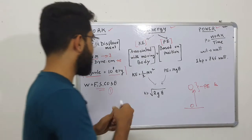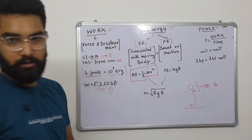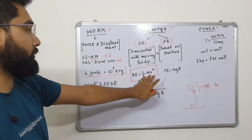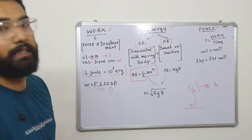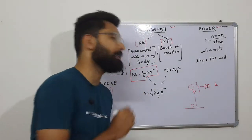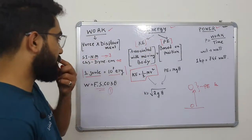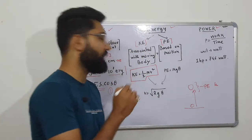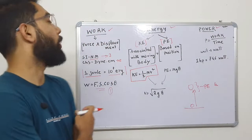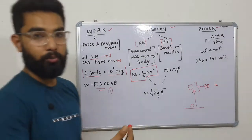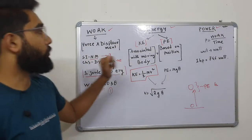The kinetic energy formula is KE = ½mv². Here, v means velocity of the moving body, and m means mass. The kinetic energy depends on velocity and mass.